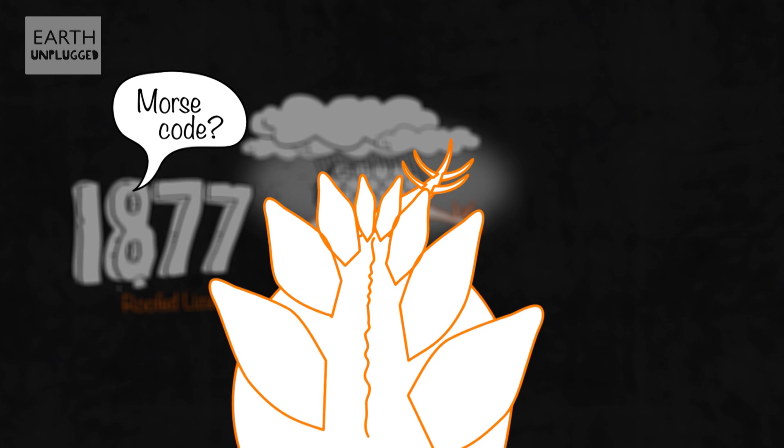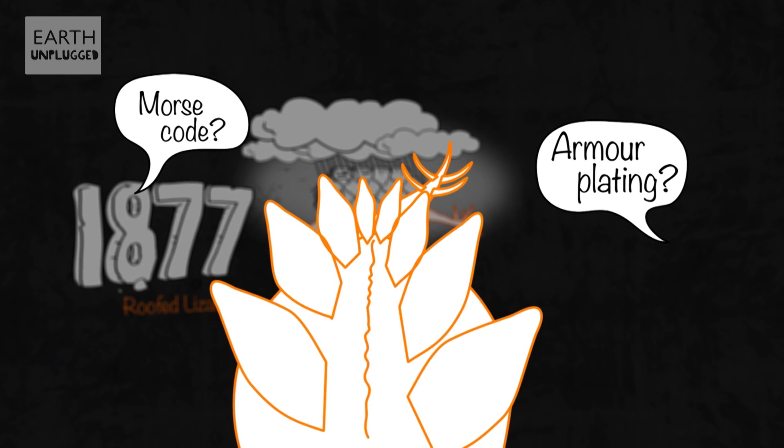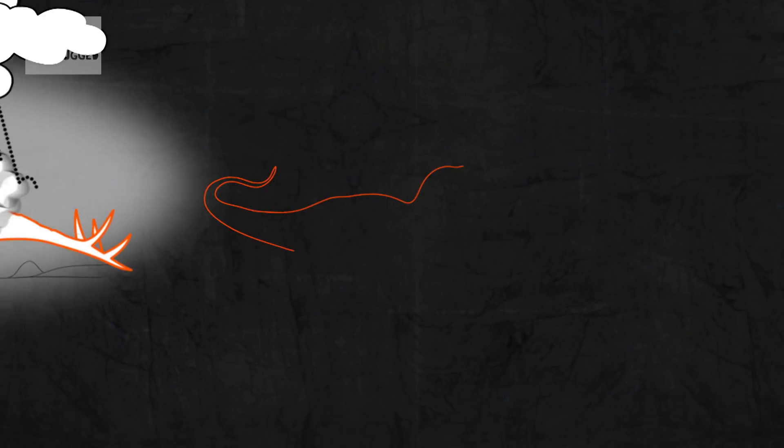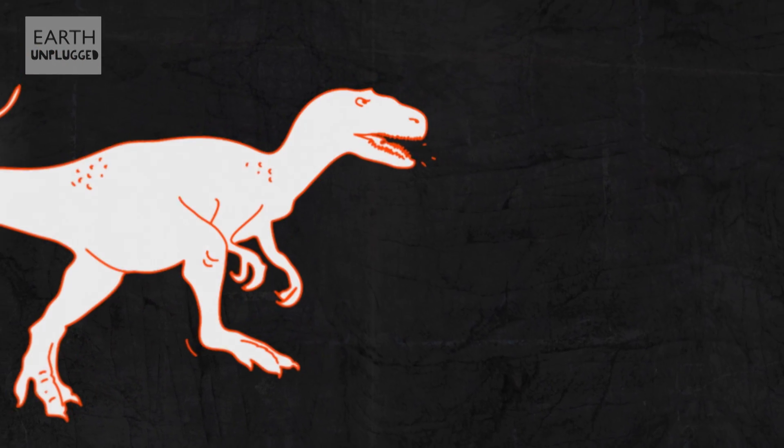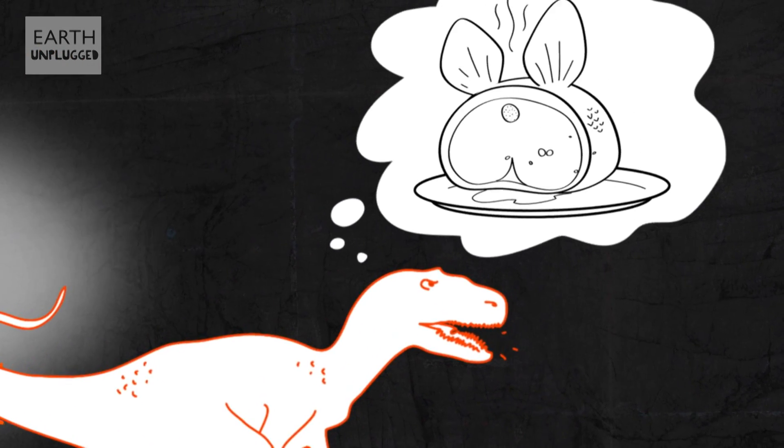Some have suggested that the plates were used as armor, giving protection from its main predator, the vicious, terrifying, and bloodthirsty Allosaurus, who like nothing more than a Stegosaurus steak for supper.